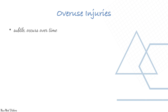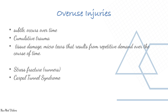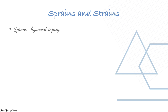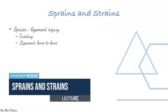Overuse injuries are subtle and occur over time. Tissue damage and tears result from repetitive demand over time. Examples include stress fractures and carpal tunnel syndrome, seen in manual labor occupations and athletics.